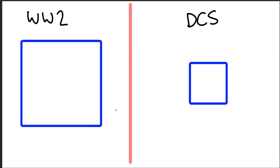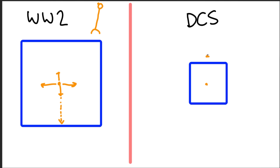The reason we have a problem with warbirds in DCS is because if you think back to World War II, the control column is long. When the pilot moves it left, right, forwards, backwards, it takes quite a long time to reach the limits of travel, so smooth inputs can be done. Most of us are on desktops with little mini joysticks.